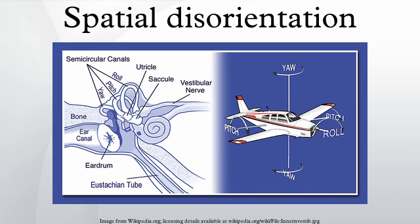The two otolith organs — the utricle and saccule — are located in each ear and are set at right angles to each other. The utricle detects changes in linear acceleration in the horizontal plane, while the saccule detects gravity changes in the vertical plane. However, the inertial forces resulting from linear accelerations cannot be distinguished from the force of gravity; therefore, gravity can also produce stimulation of the utricle and saccule. A response of this type will occur during a vertical take-off in a helicopter or following the sudden opening of a parachute after a free fall.